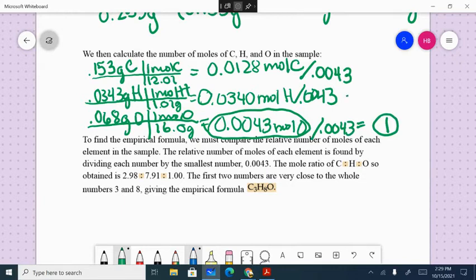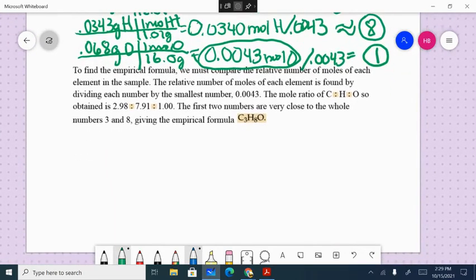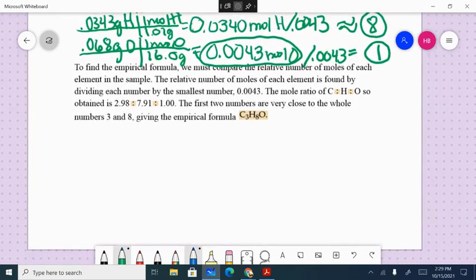The subscript for hydrogen will be, and I'm going to put the close enough symbol there, 8. And for carbon is 3. So the empirical formula for isopropyl alcohol is C3H8O. Now, I knew that.